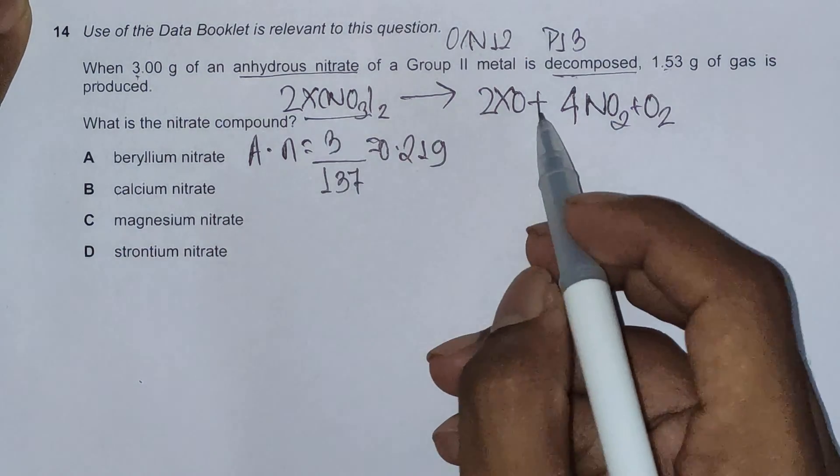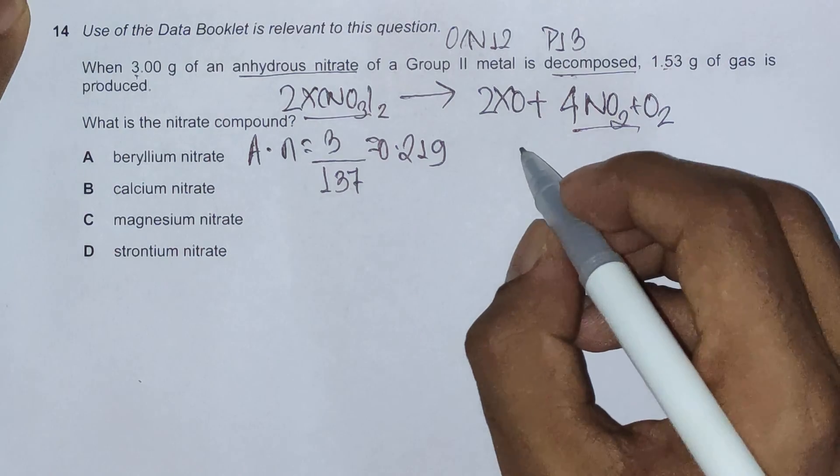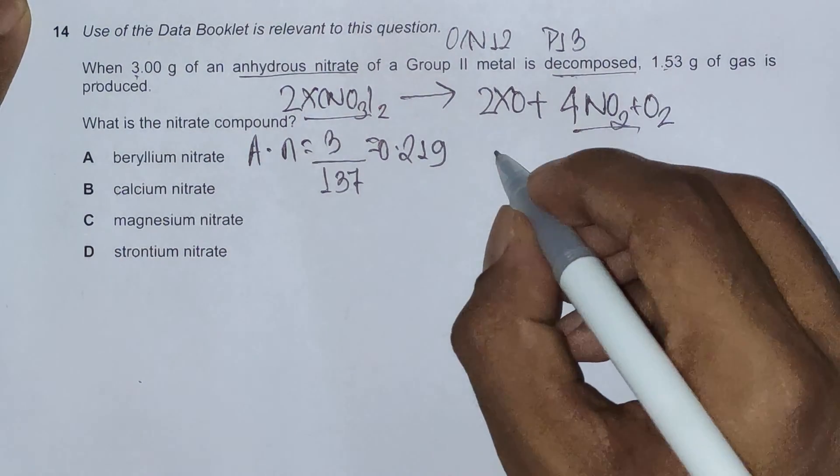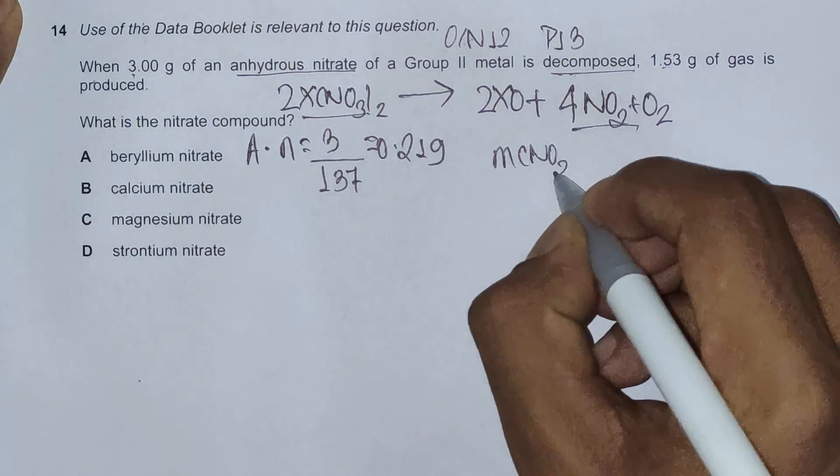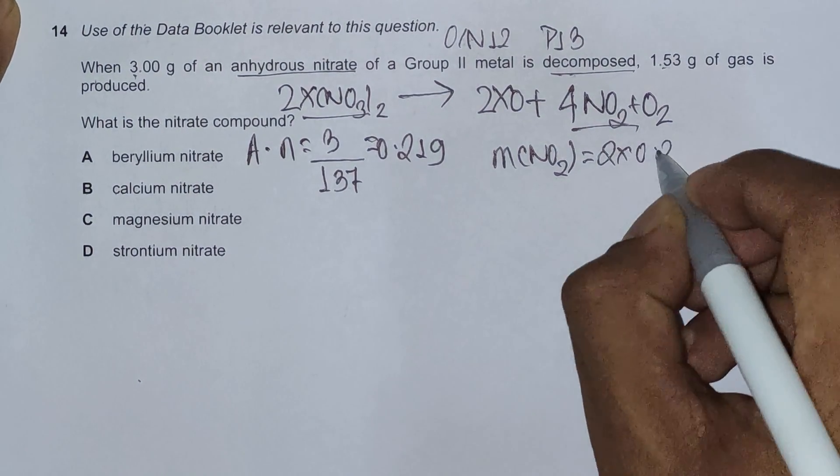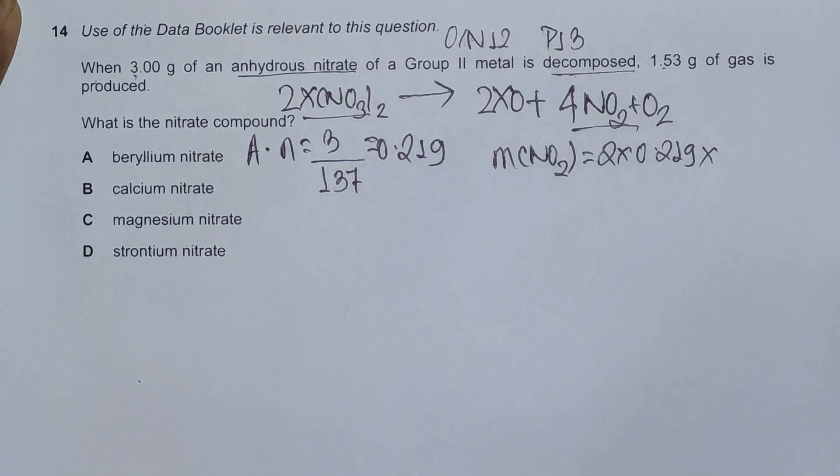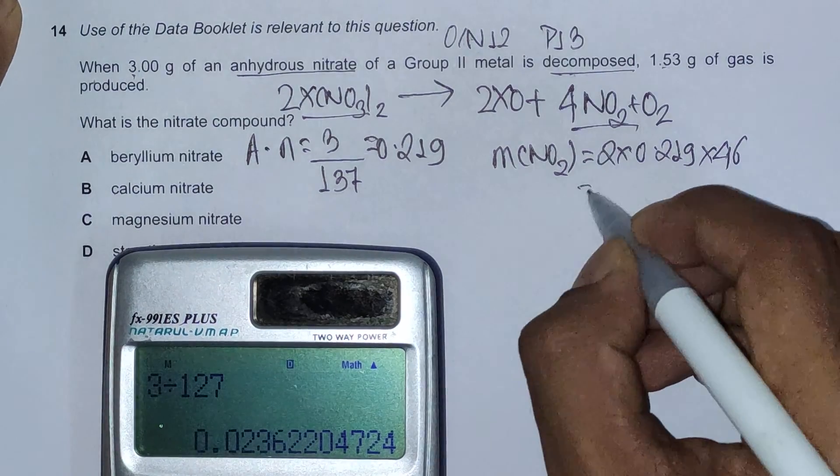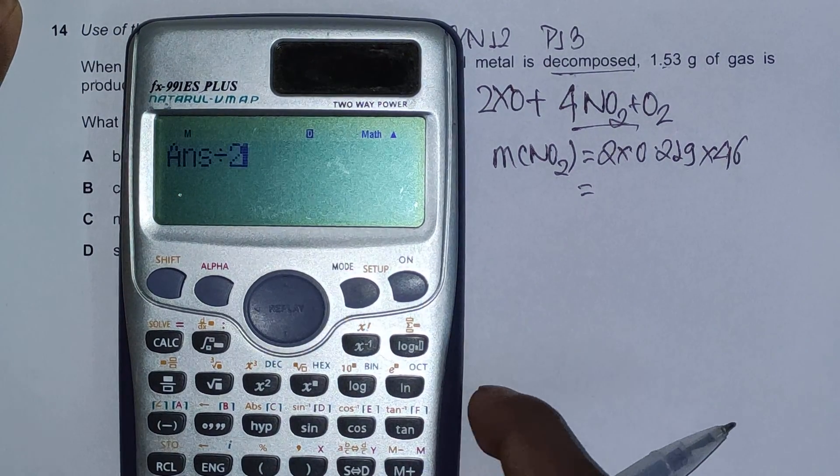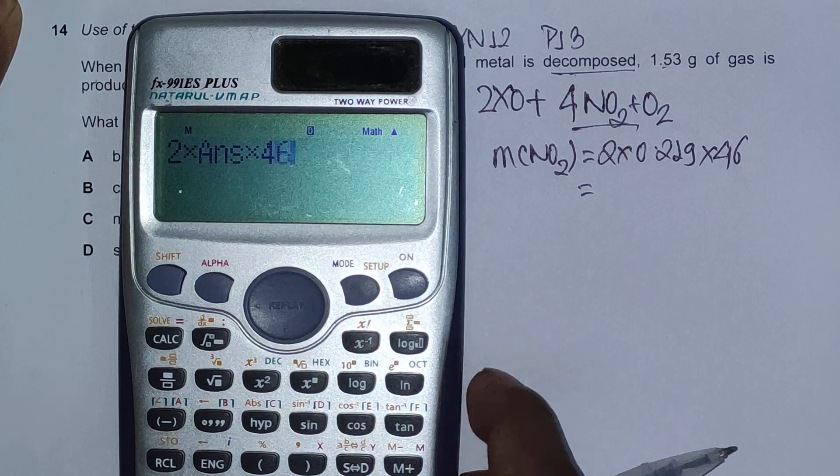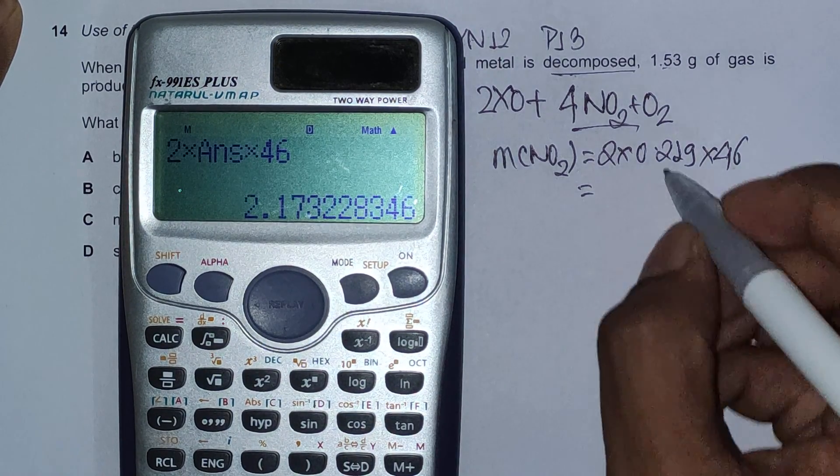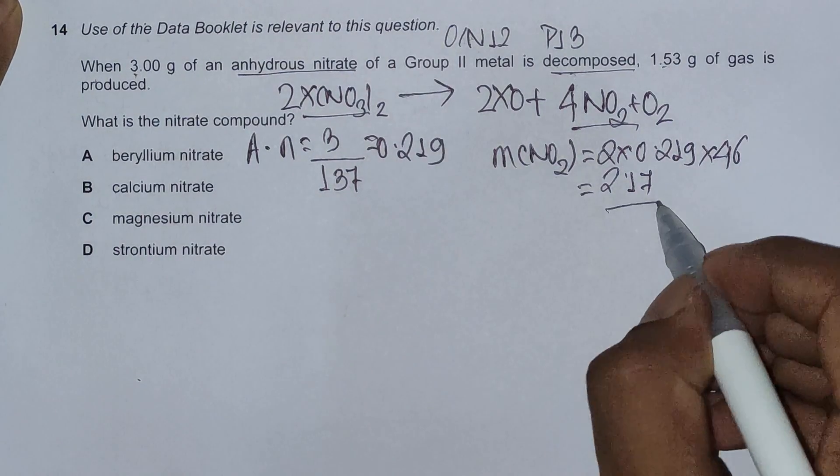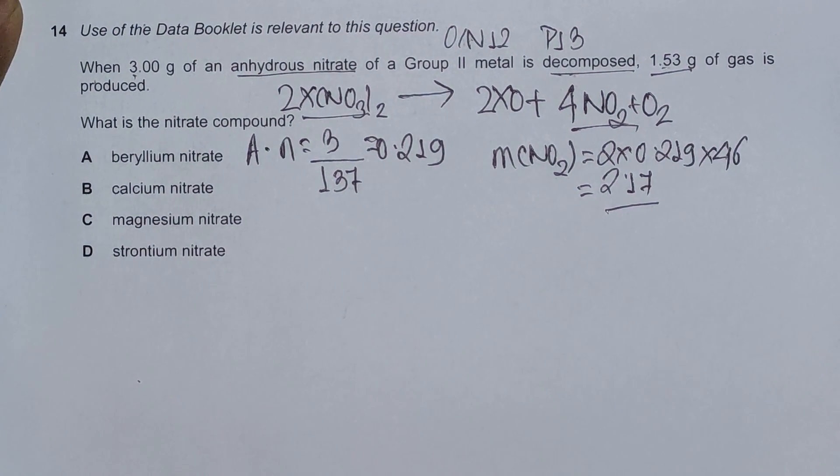We have twice the moles of nitrogen dioxide produced, so moles of NO2 is 2 times 0.0219. Mass of NO2 is 2 times 0.0219 times its Mr value - Mr of NO2 is 46. So 2 times 0.0219 times 46 is 2.17 something.